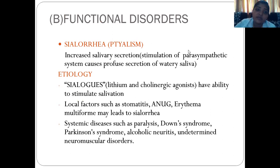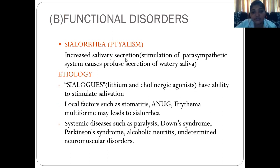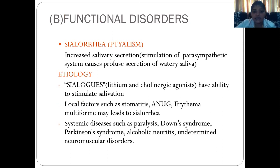Local factors which lead to sialorrhea include stomatitis, ANUG — that is acute necrotizing ulcerative gingivitis — and erythema multiforme. Systemic causes include paralysis, Down syndrome, Parkinson's syndrome, and certain neuromuscular disorders. The protective buffering system is the episodic hypersecretion of saliva, or waterbrash, which happens to neutralize stomach acid in individuals with gastroesophageal reflux disease. This reflex action may also lead to sialorrhea. Psychic factors, metal poisoning, and facial paralysis also lead to sialorrhea.